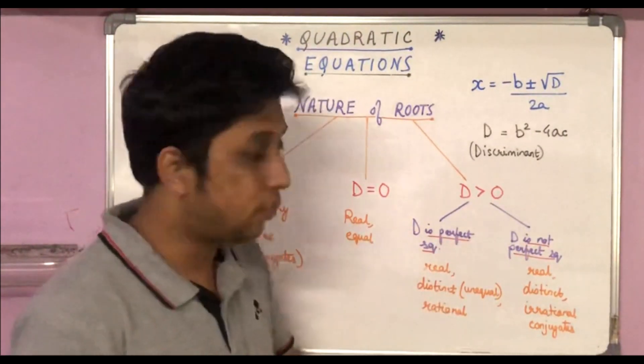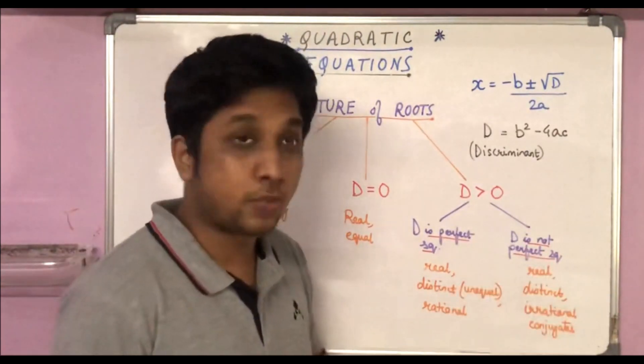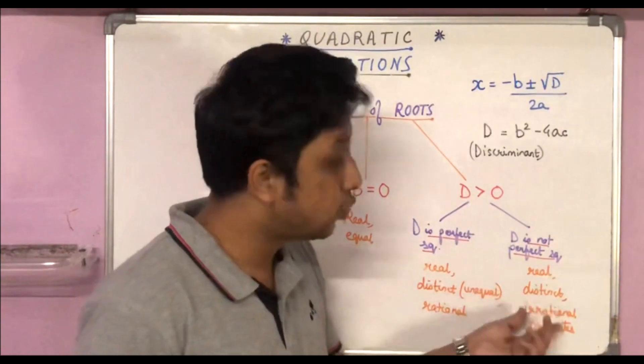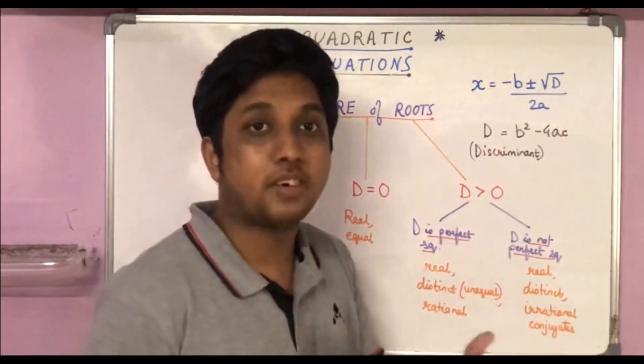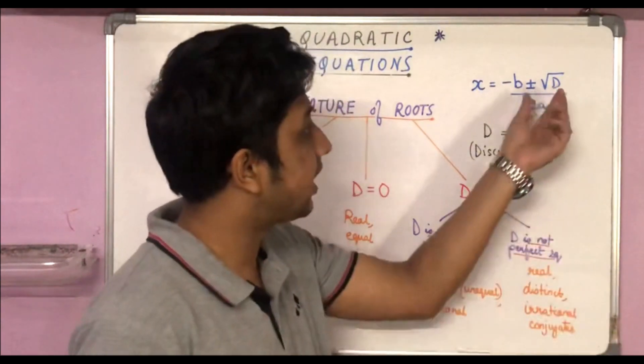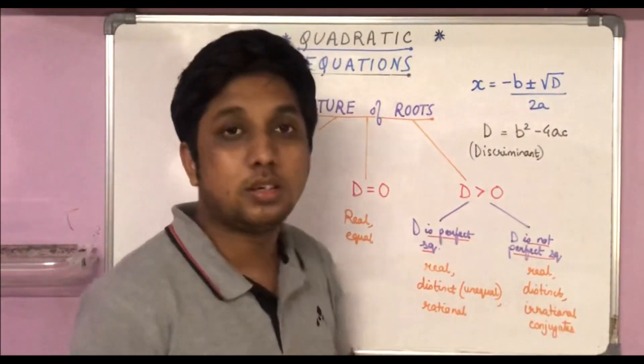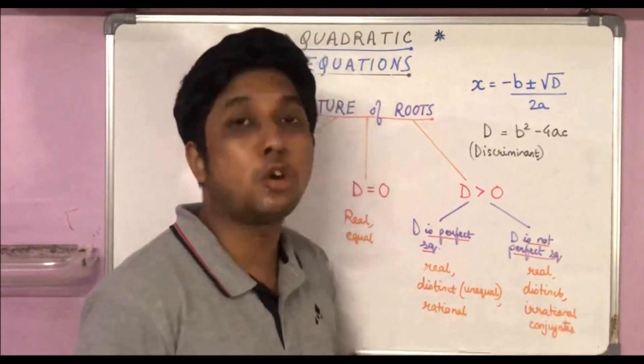If D is not a perfect square, we would get real and distinct roots, but the roots would be irrational because root over D does not have a rational output. That's why you will get irrational roots, and they would again be irrational conjugates of each other.